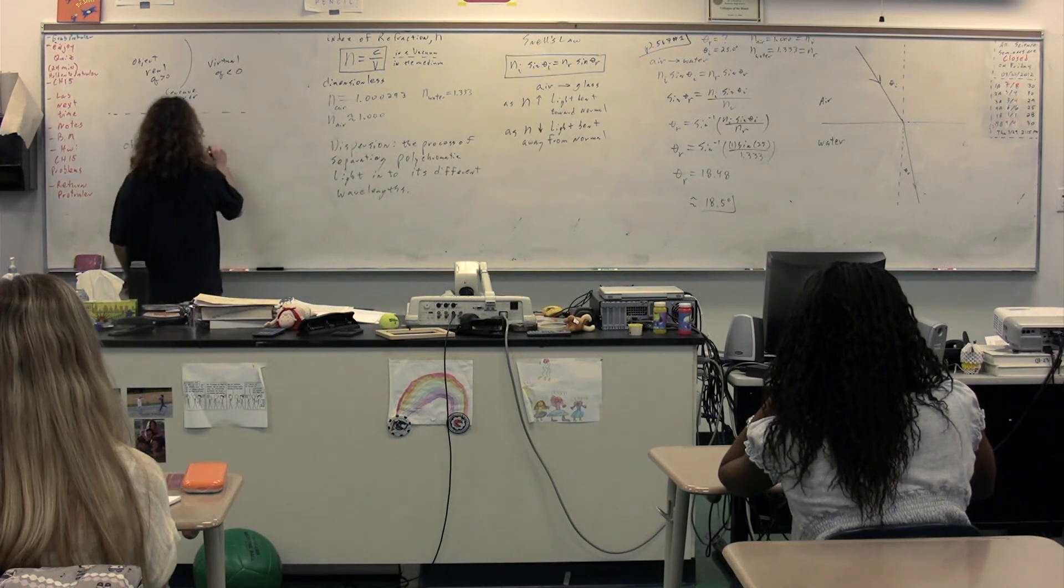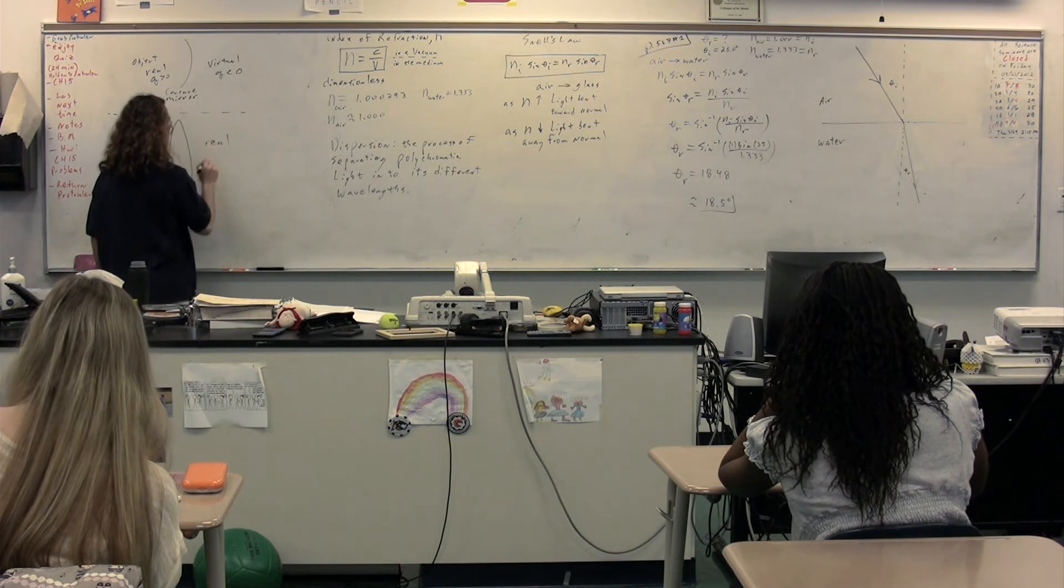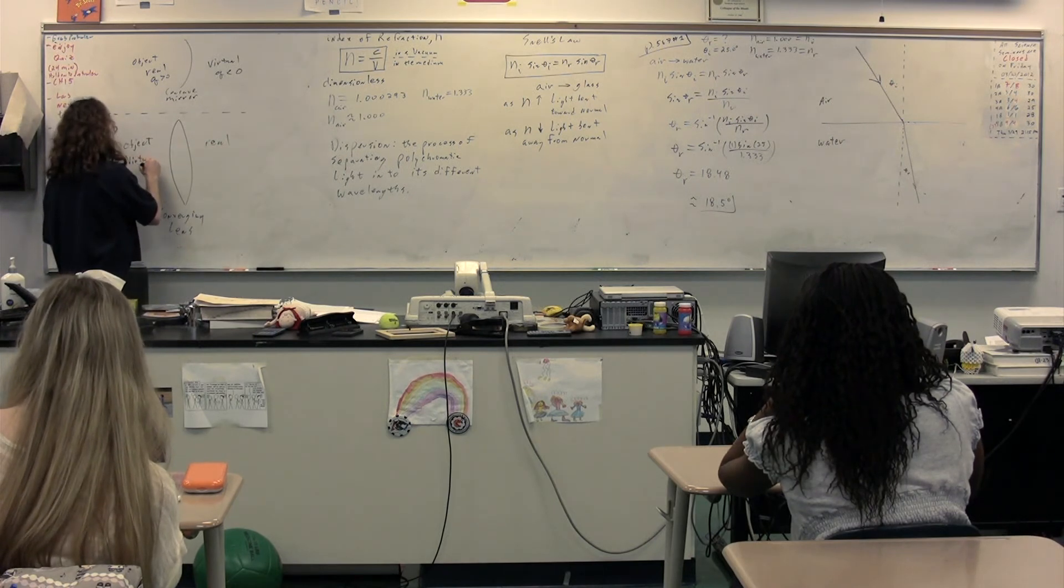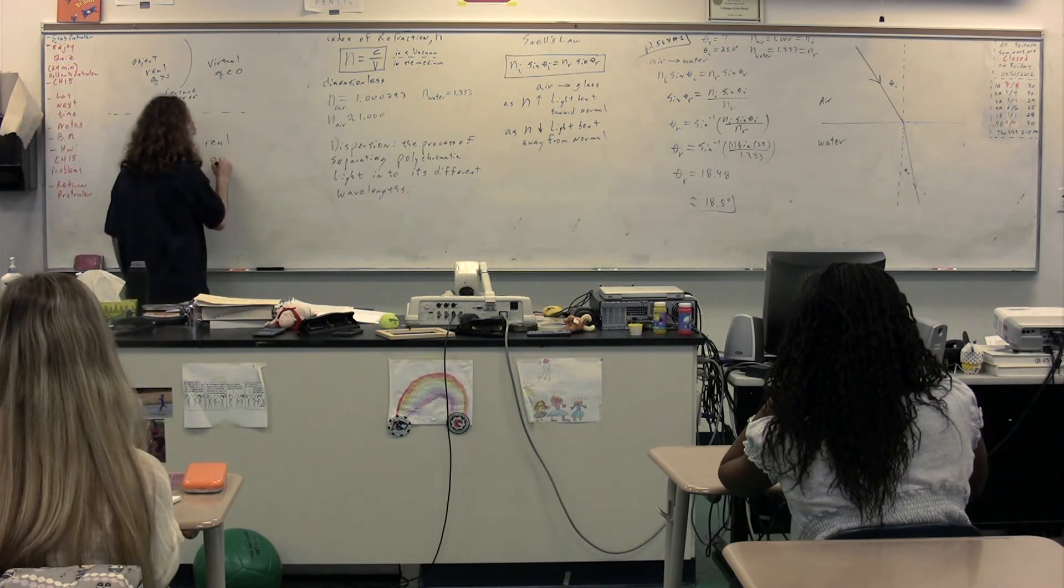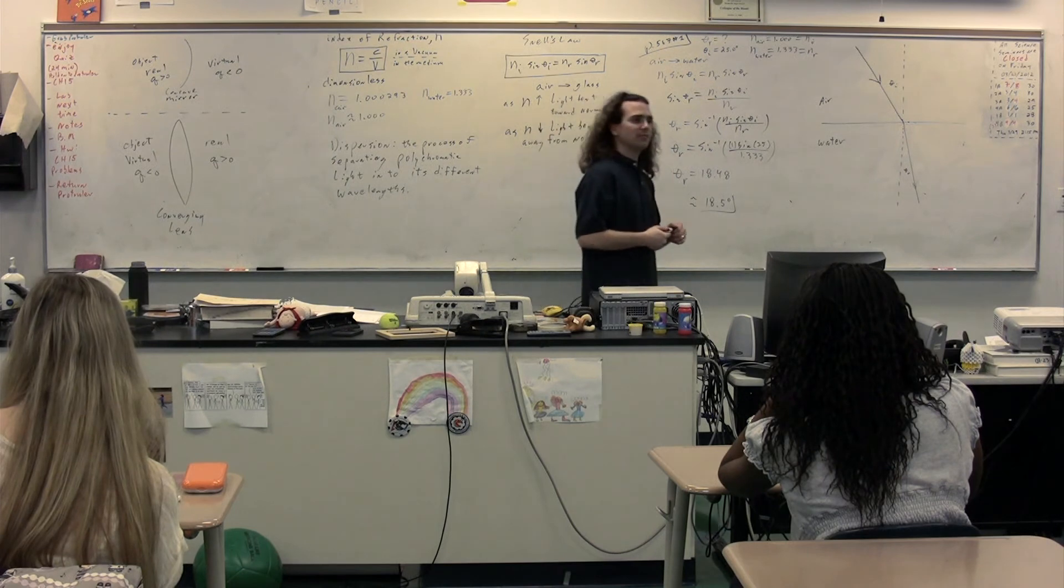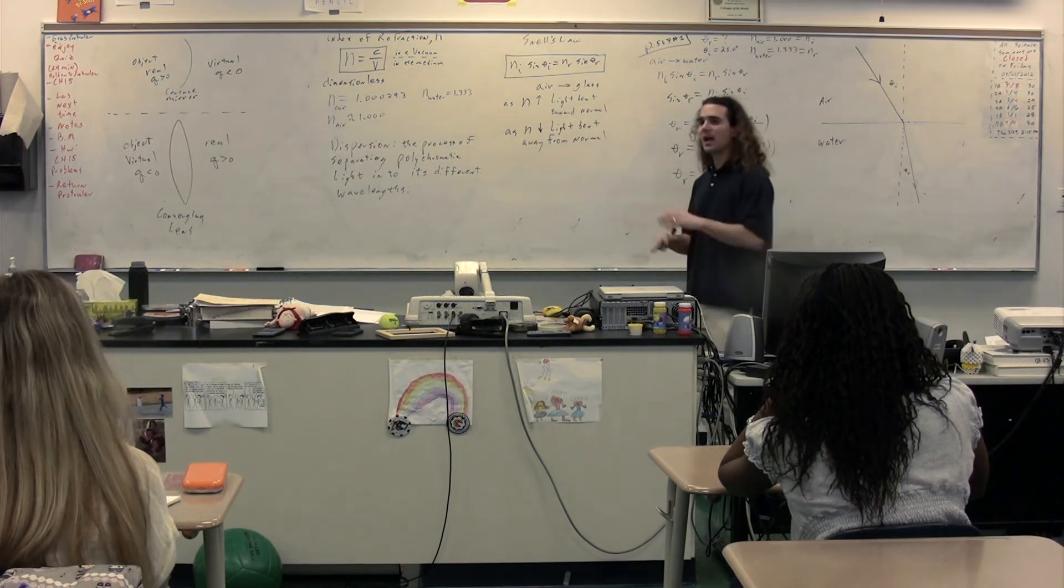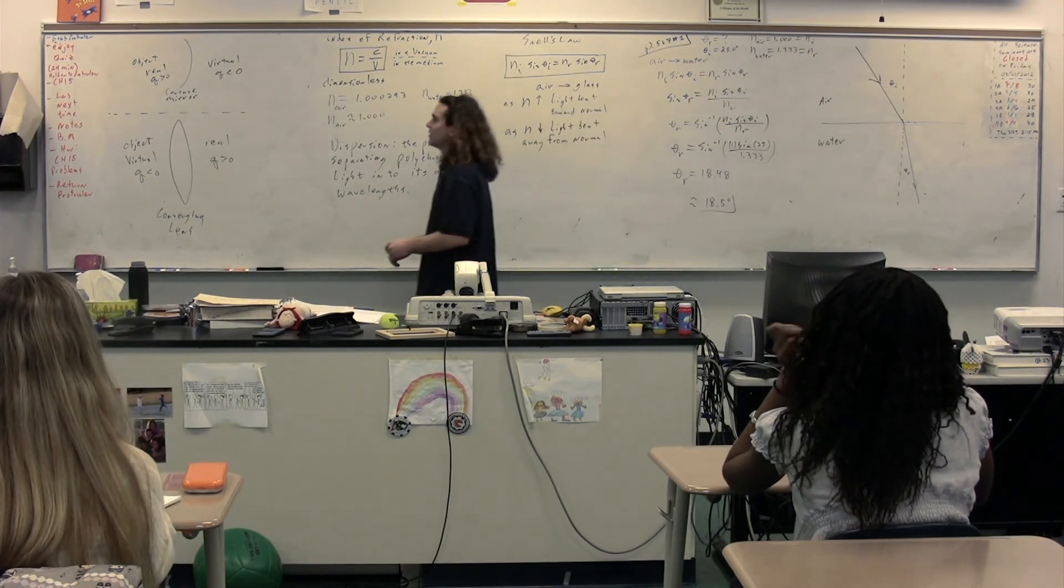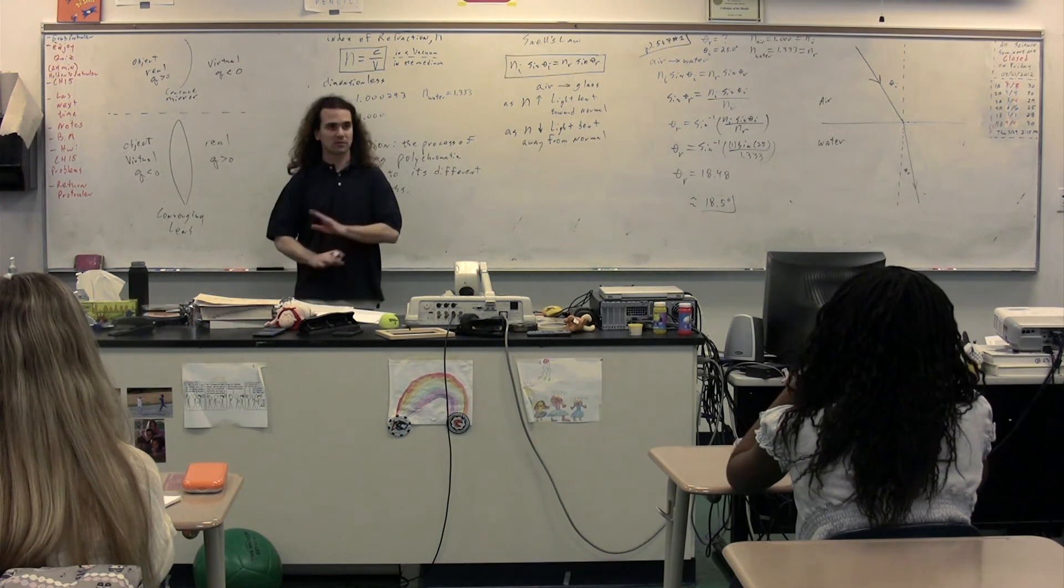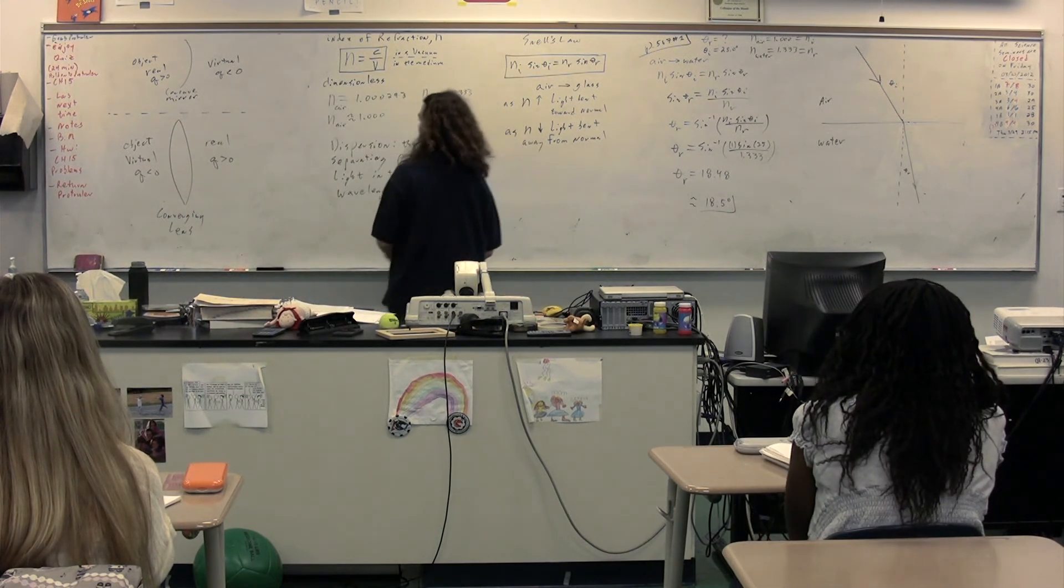This, bless you, is the real side for a lens. And this is the virtual side. In other words, this is where the image distance is less than zero. This is where the image distance is greater than zero. Notice how they are flipped. Mirror versus lens. And it all comes down to the fact that light bounces off the mirror and light goes through the lens. That's it. That's why they are switched.